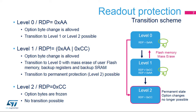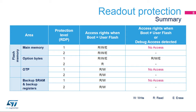This slide shows the possible transitions between each readout protection level. It is always possible to raise the protection level, but regression is only possible between Level 1 and Level 0, with the consequence of a full user flash erase operation. Note that the RDP level is coded in one option byte: Level 0 is coded by an 0xAA value, Level 2 is coded by a 0xCC value, and Level 1 is coded by any value other than 0xAA or 0xCC.